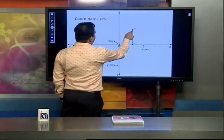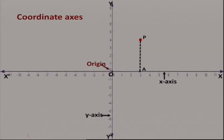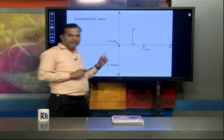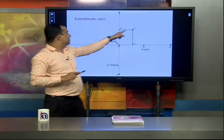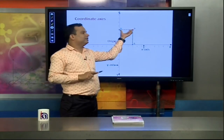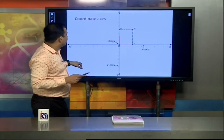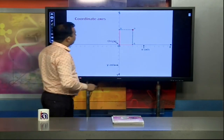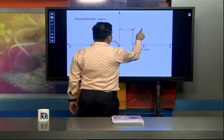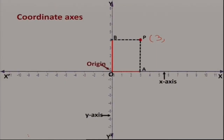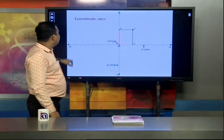To find the coordinates of point P, draw a perpendicular from P to the x-axis. Measure the distance from origin O to that foot of perpendicular — suppose it is 3 units. That is the x-component. Then draw a perpendicular from P to the y-axis; suppose that distance is 4 units. So the ordered pair for point P is (3, 4), where 3 is the x-distance and 4 is the y-distance from the origin.